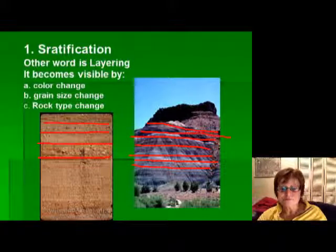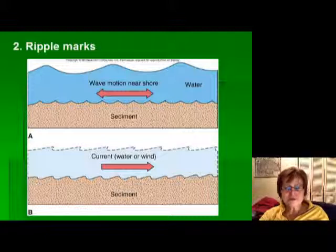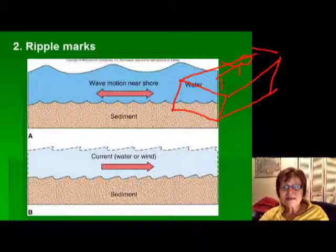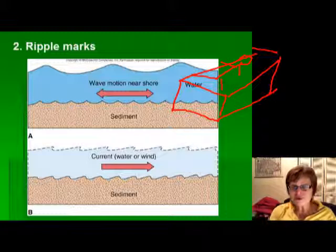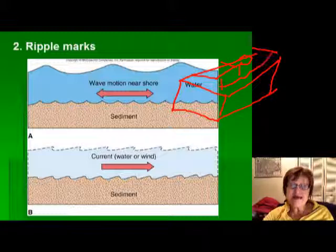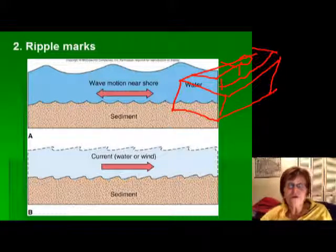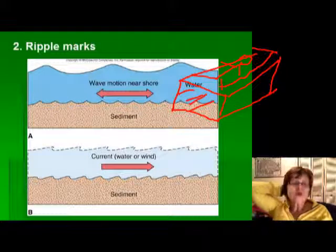The next sedimentary structure is ripple marks. When we look at ripple marks, we're looking at the bedding surface — like the surface of your bed at home, or a beach. Whatever happens on that bedding surface stays there as sedimentary structures. Some structures are seen on the bedding surface, like ripple marks, and others can be seen within the beds, like cross bedding.